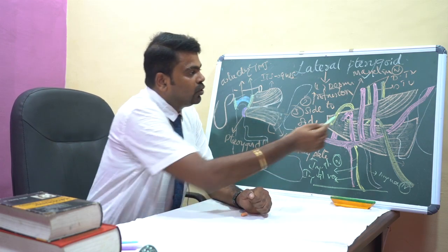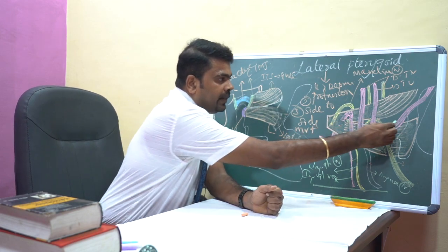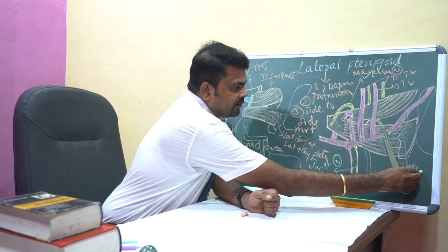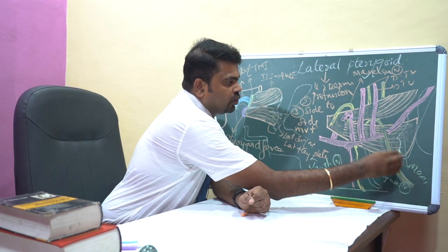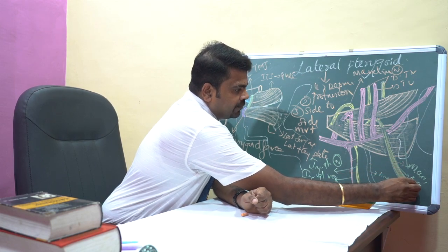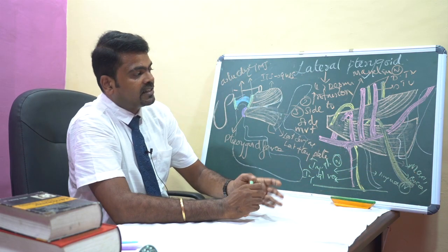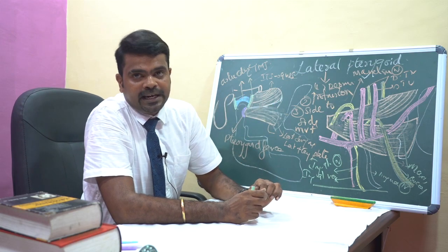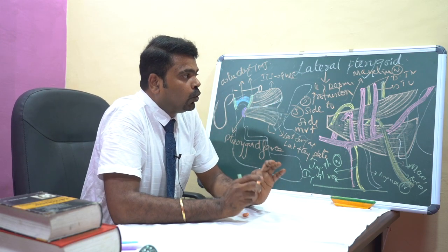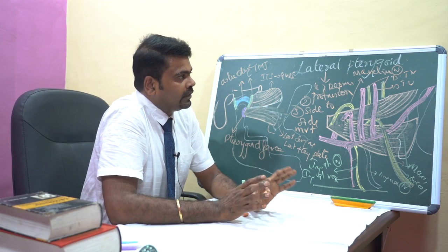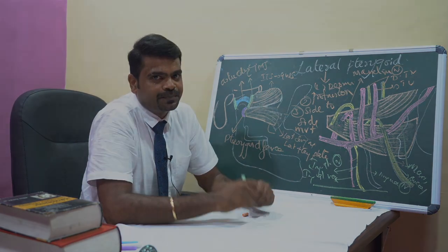Between the two heads, we have two structures. Number one is the maxillary artery, and number two is the buccal nerve. These are the structures present between the two heads of the lateral pterygoid muscle. This concludes our discussion of the lateral pterygoid muscle. Thank you.